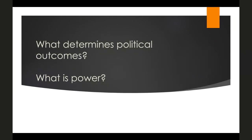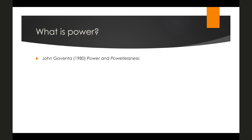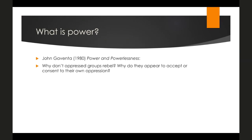In his 1980 book Power and Powerlessness, Gaventa's research question is: why don't oppressed groups rebel? Why do they appear to accept or consent to their own oppression? We see massive inequality and domination in the world, but we don't always see rebellions. At the same time, there are plenty of cases of uprisings and resistance — so what explains the difference between when groups rebel and when they do not?